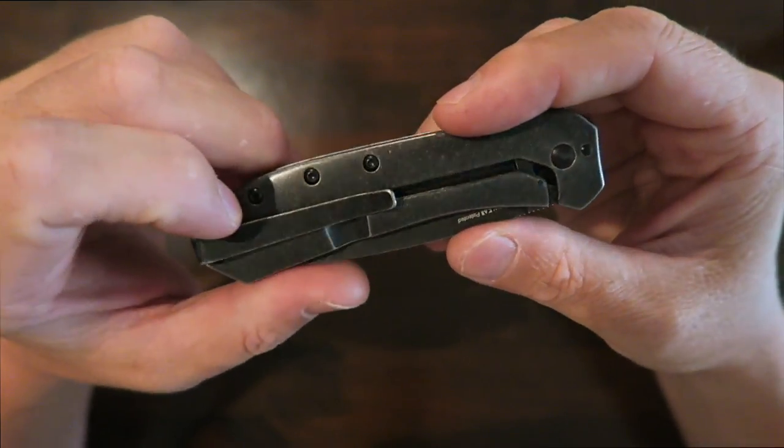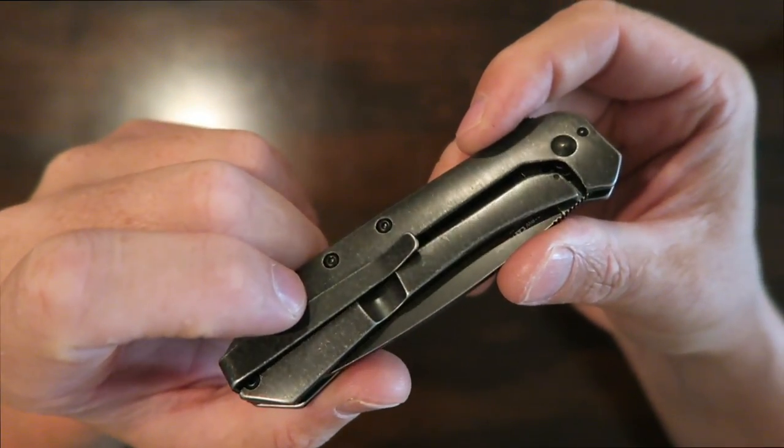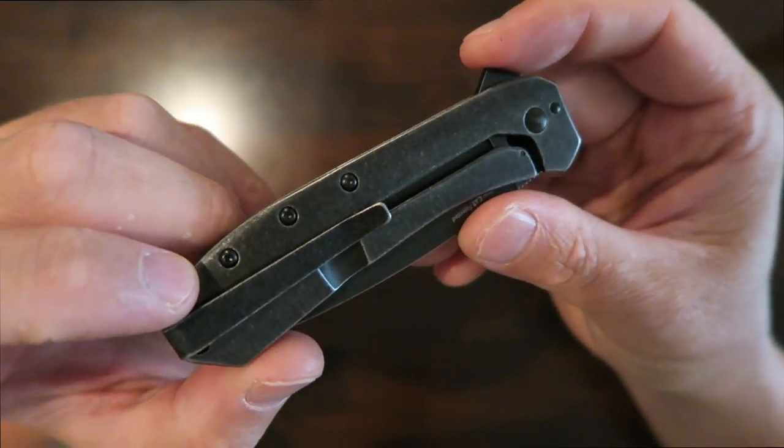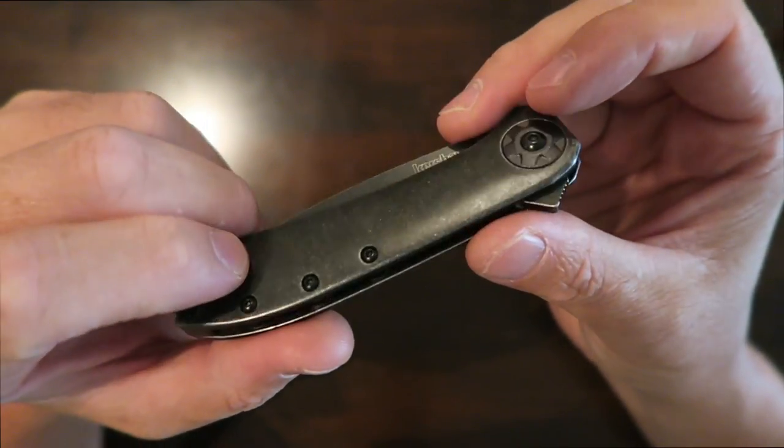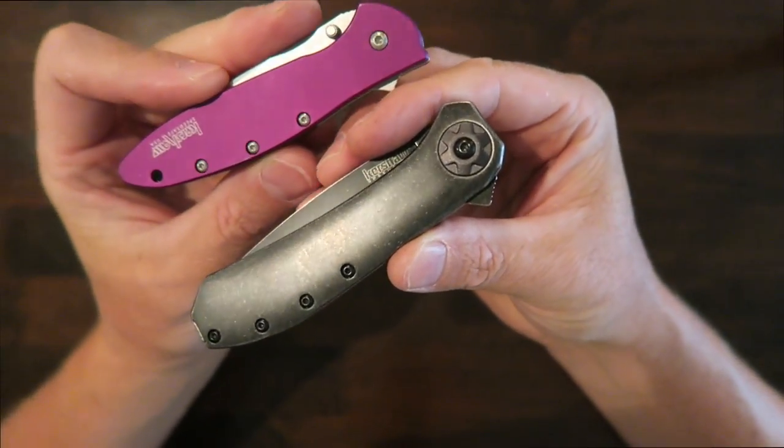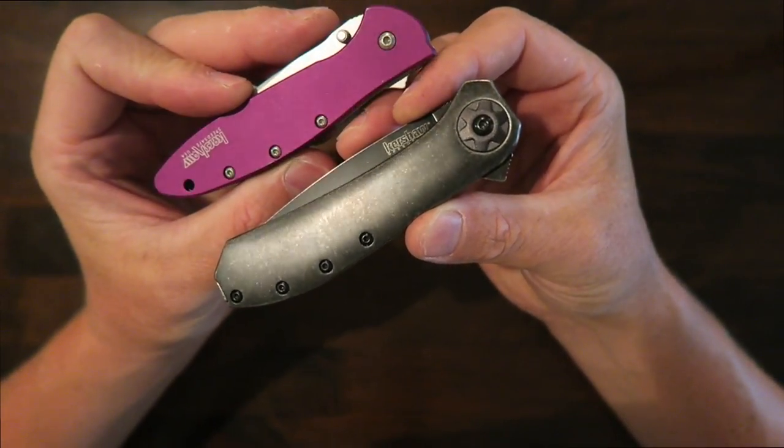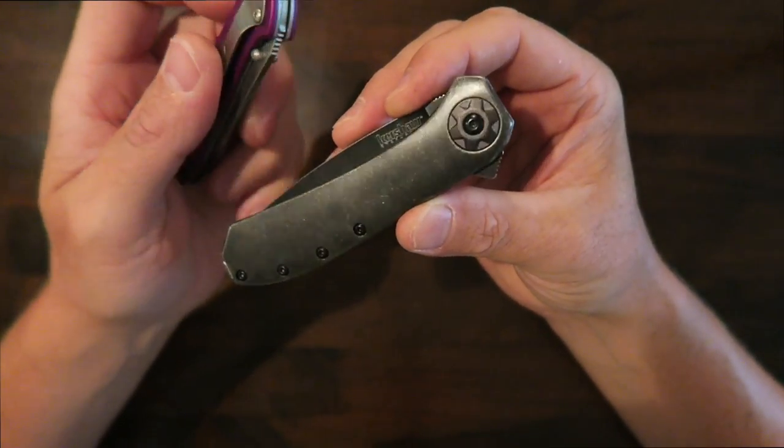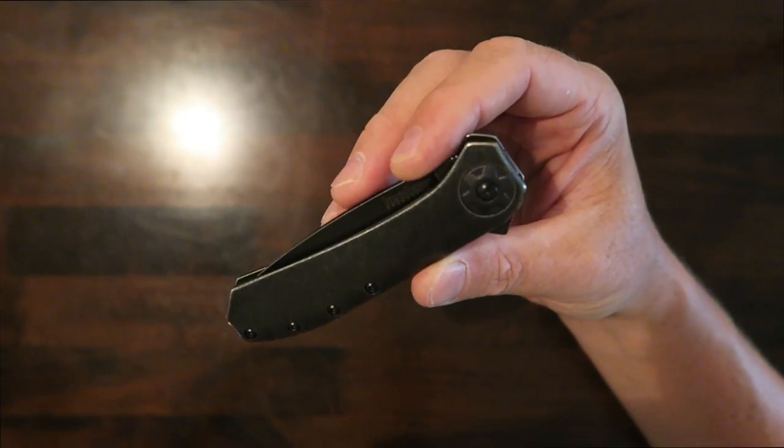Frame lock. No lock bar stabilizer on this one. This one was designed by Todd Rexford. So Rexford design knife there. It has the speed safe flipper. Very similar to a leak. It's just a little bit bigger than the leak. A little bit more handle there. No thumb studs since it has the flipper.